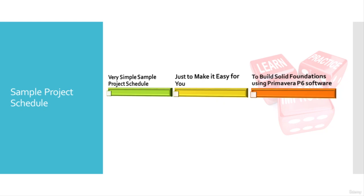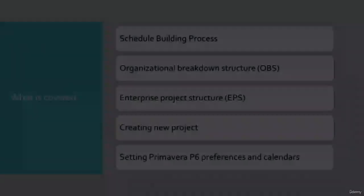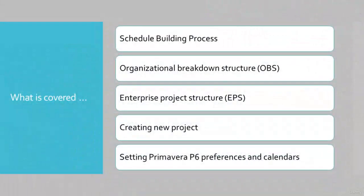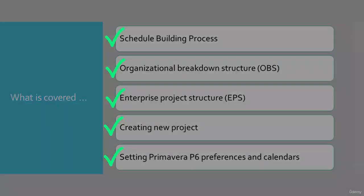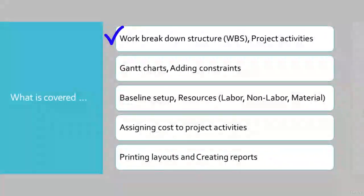Throughout the course, I will help you learn the important concepts of various project scheduling and control tasks. Once the basic project schedule building steps are understood, we will learn to create the enterprise project structure and creation of a new project. We will perform the procedure to configure Primavera P6 preferences and calendars. I will help you create the work breakdown structure and its related activities. Then we will see how to customize the Gantt charts and learn about adding constraints to different project activities.